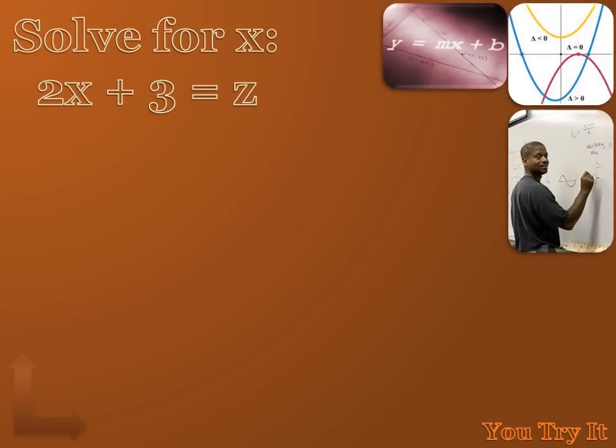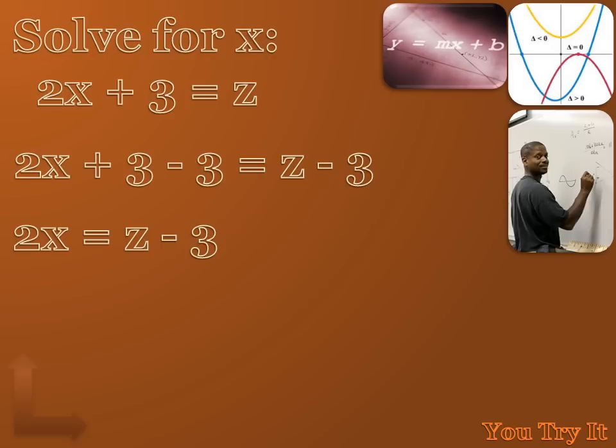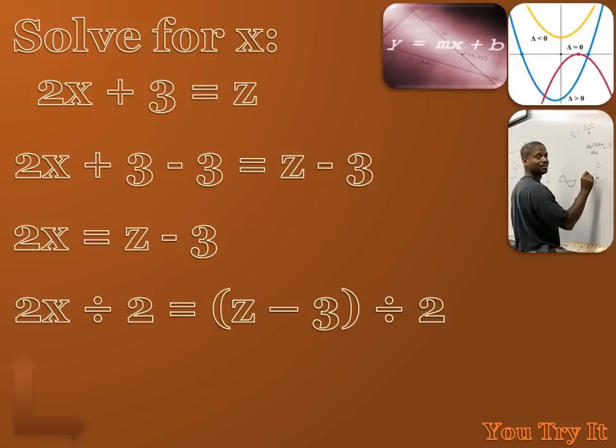Well, I'm asked to solve this equation for x, which means I need to isolate x. I need to get it to read x equals something. So I've got to get rid of two things that are kind of impacting the value of x. I've got a 2 times x, and I've got a plus 3. And I always want to get rid of the pluses and minuses first, so I'm going to subtract 3 from both sides of the equation. When I do that, I get 2x equals z minus 3. Now I've got to get rid of that 2, and that's 2 times x. So the inverse operation is to divide by 2. When I divide both sides of the equation by 2, I get x equals z minus 3 divided by 2, or x equals 1 1⁄2 z minus 1 1⁄2.